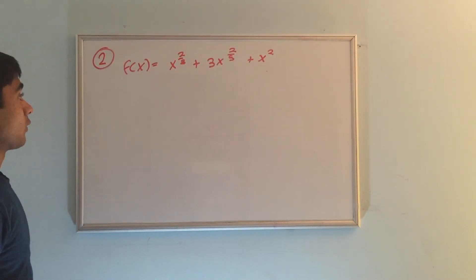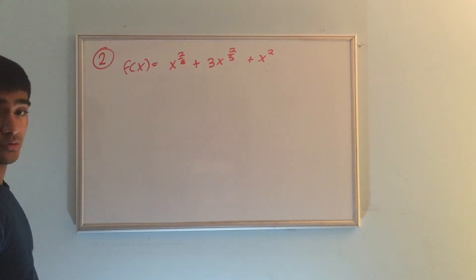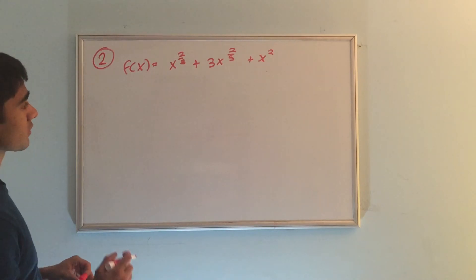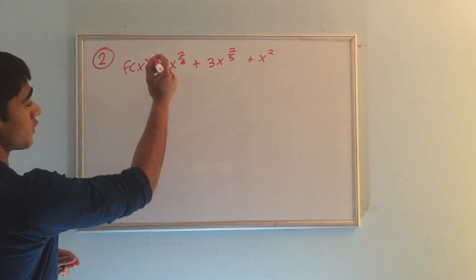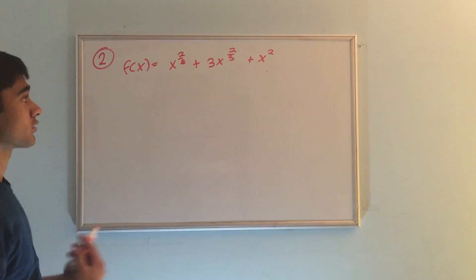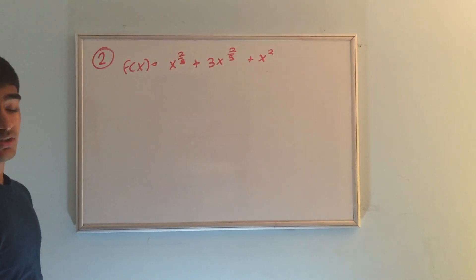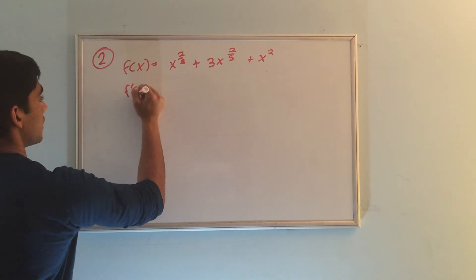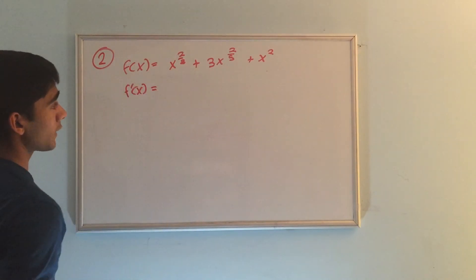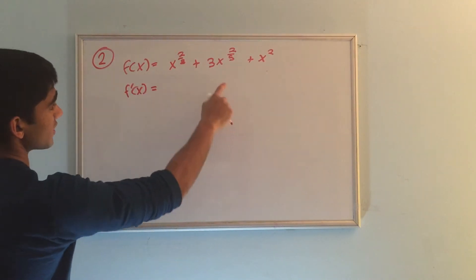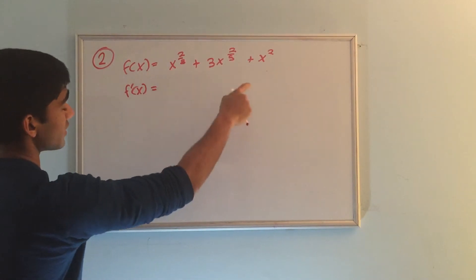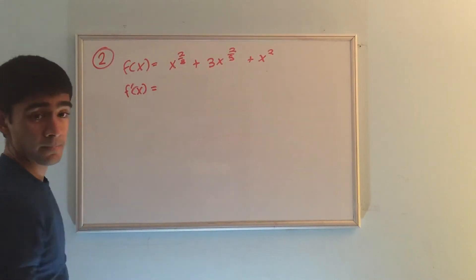The next problem is: f of x equals x to the 2 thirds power plus 3x to the 2 fifths power plus x squared. In this case, we have the format of a base x raised to a constant power — whether it's 2 thirds, 2 fifths, or 2 — so the first thing I think of is the power rule. We can also apply the sum rule, since we can take the derivative of each independent term and add them together.